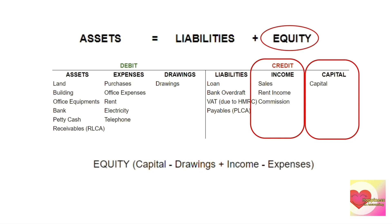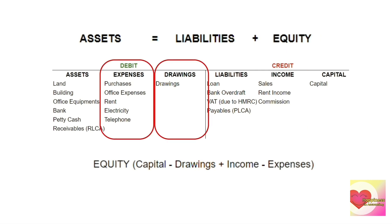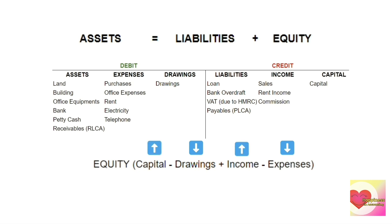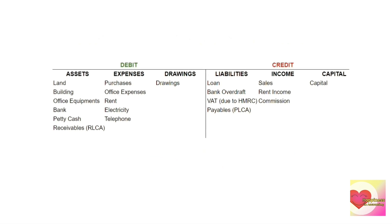The equity is on the right side of the equation, so income and capital are on the credit side of DEAD CLIC. You might wonder why expenses and drawings are on the debit side — they are not assets, and being part of equity, one might expect them on the credit side. However, notice the minuses: drawings and expenses are deducted from equity — they decrease equity. Since income and capital increase equity and go to credit, expenses and drawings, which decrease equity, go to the opposite side: debit.